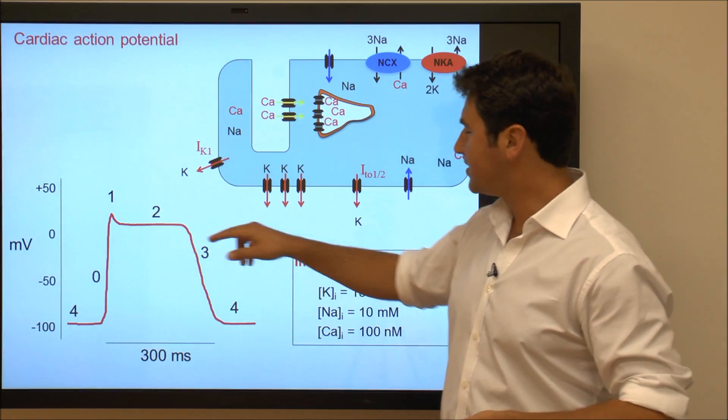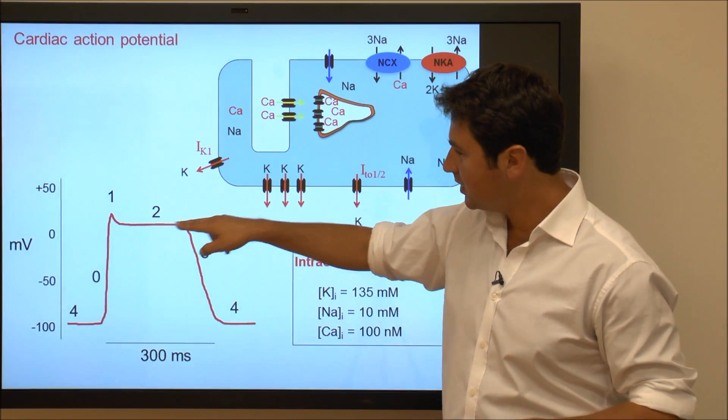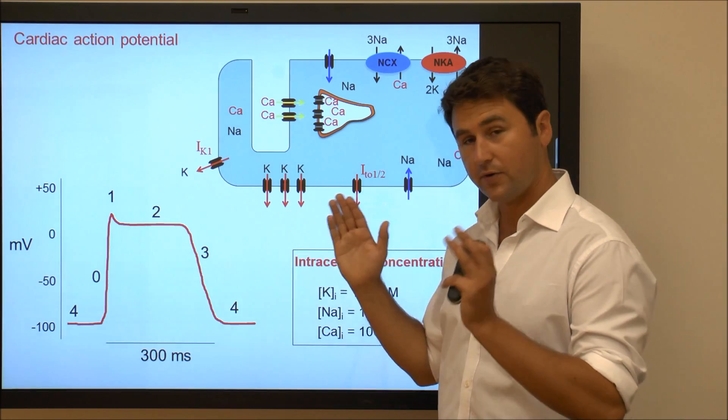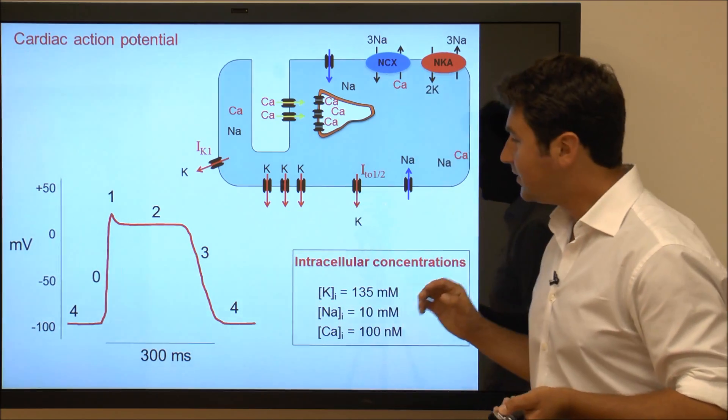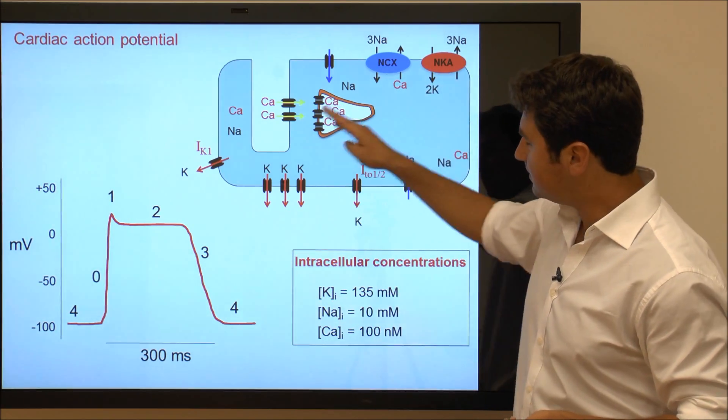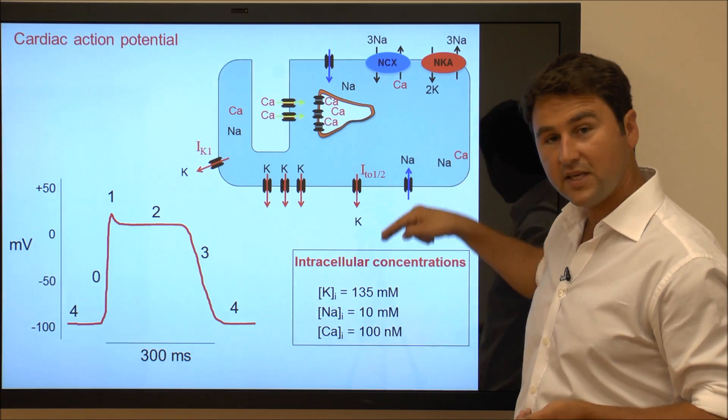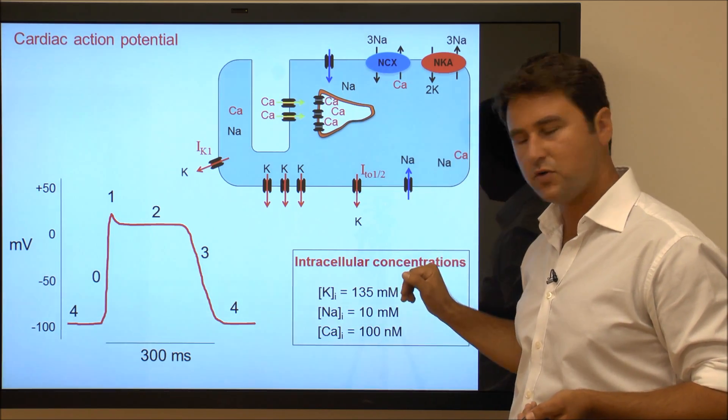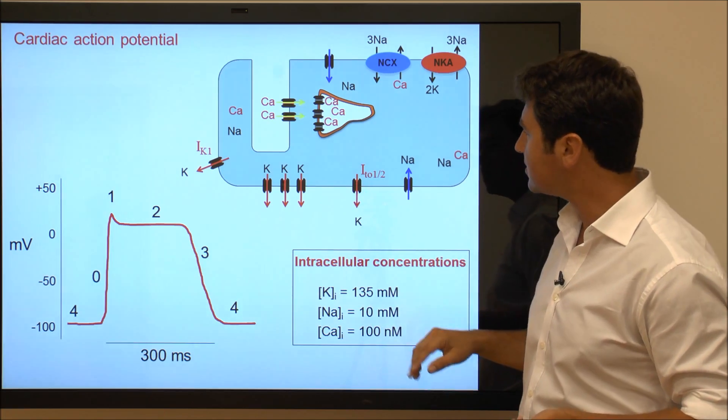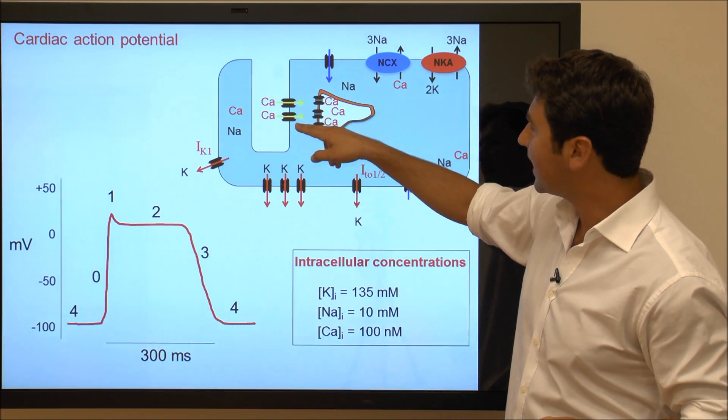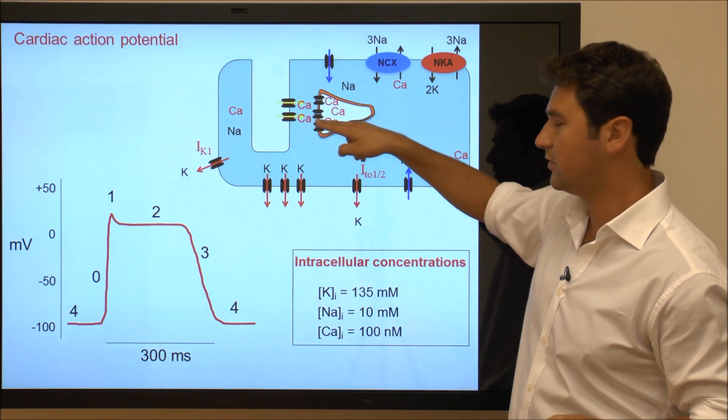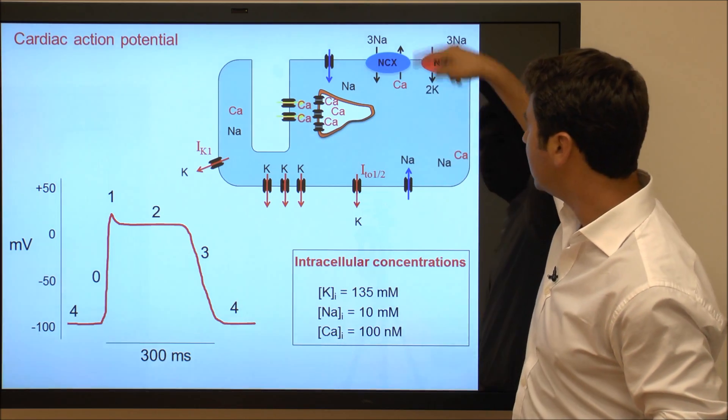Then we enter phase 2, which you can see has a fairly flat slope for a prolonged period. That is a consequence of potassium leaving the cell from IK slow and some of the other channels, as well as calcium coming into the cell through the L-type calcium channels, but also calcium being released from the SR as a consequence.